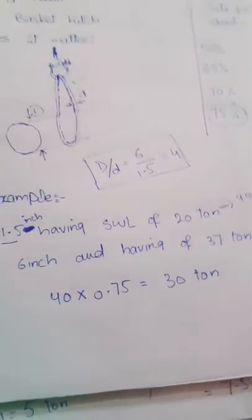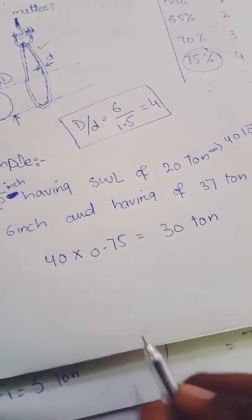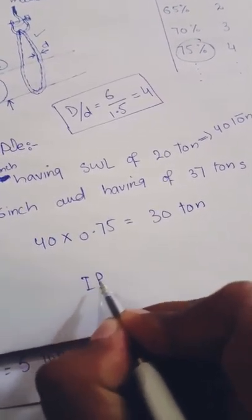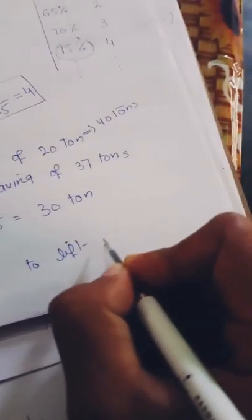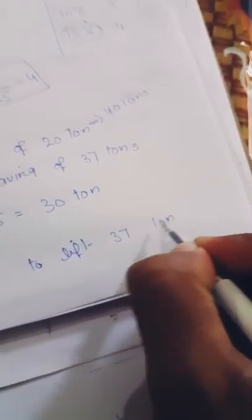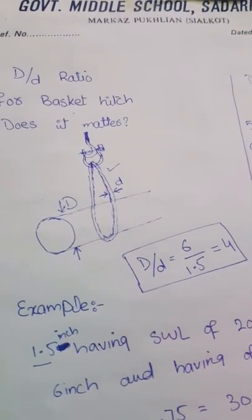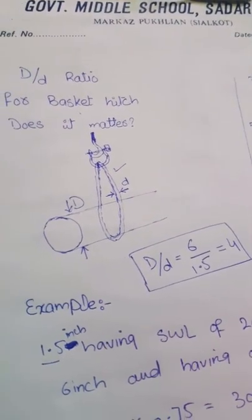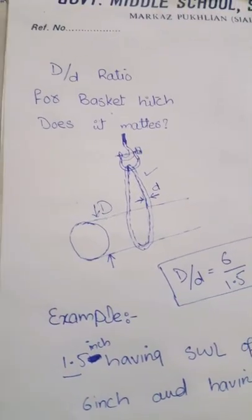For lifting 37 tons it fails. It fails to lift 37 tons with this basket hitch. So D/d ratio matters a lot for a basket hitch. Don't ignore it.